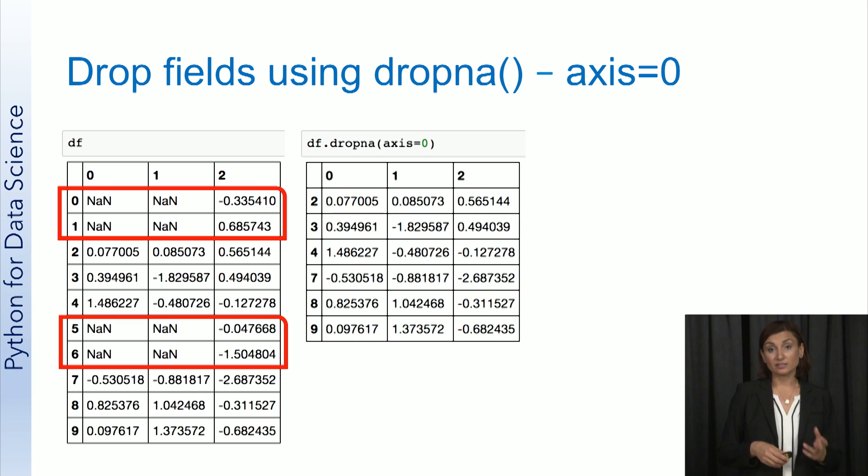With the axis 0 option, which is also the default for dropNA, any rows with missing values will be eliminated or taken out of the data frame. So if you look at here, row 0, 1, 5, and 6 are no longer in the data frame after executing the dropNA function with axis 0.